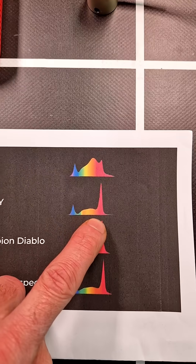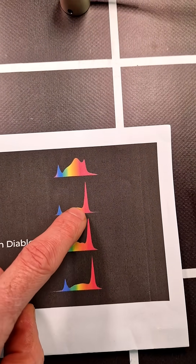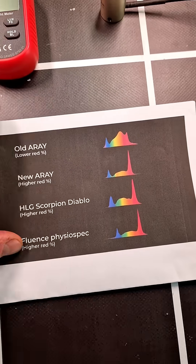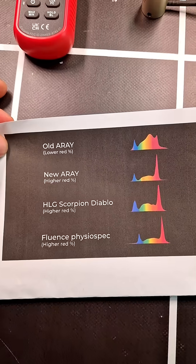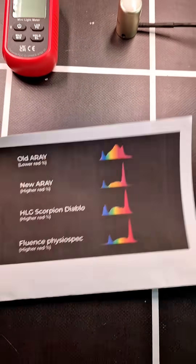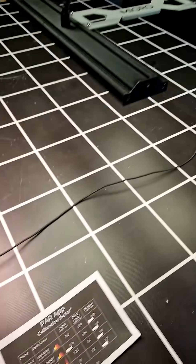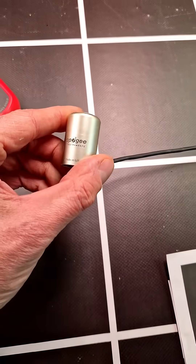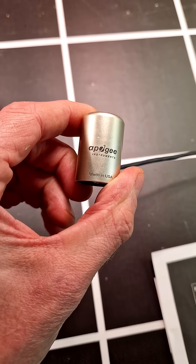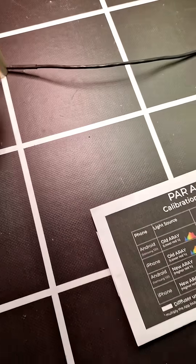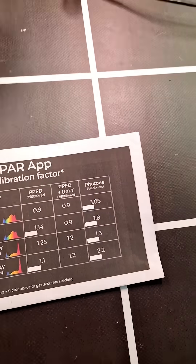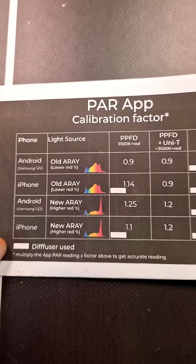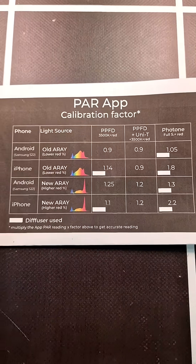But the PPFD and Photon apps aren't calibrated to pick up this big spike in 660nm red. So I've updated based on their existing settings. I've tested under both the old array and the new array and compared against the Apogee SQ500, which is the industry standard for quantum parameters. And I've done this table here for the calibration factor.